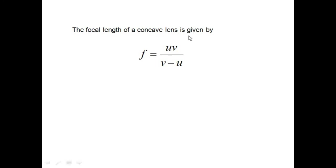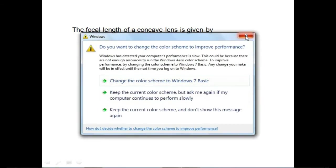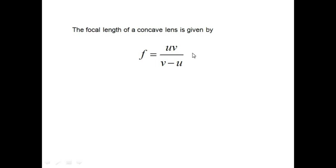After finding the mean f, the focal length of the concave lens is given by the formula — put the values in and you will get the value of f in centimetres. This is all about the experiment — how to find out the focal length of a concave lens using a convex lens. Hope you have understood the experiment. Thank you.